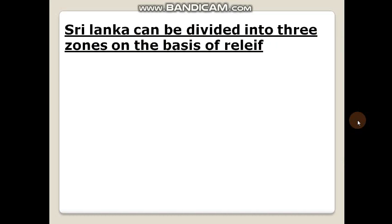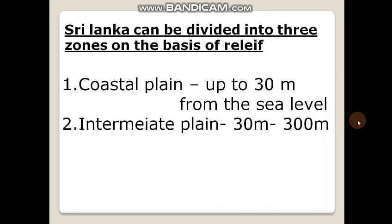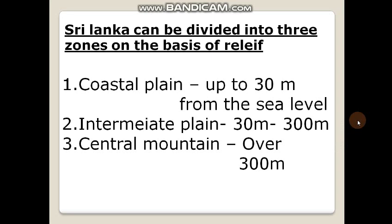When we are speaking about the relief, Sri Lanka can be divided into three zones on the basis of relief. The coastal plain is up to 30 meters from the sea level, the intermediate plain is from 30 to 300 meters from the sea level, and the central mountain is over 300 meters. You have to remember: up to 30 meters is coastal, 30 to 300 is intermediate, and over 300 is the central mountain.